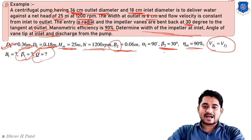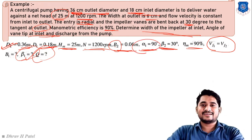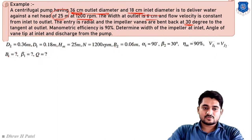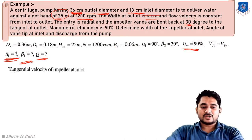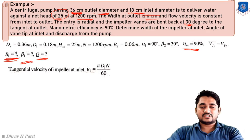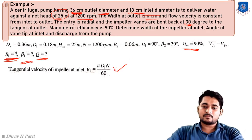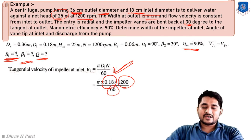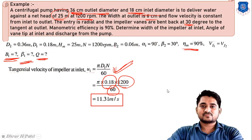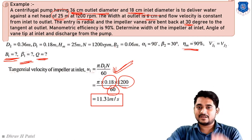For the centrifugal pump, α1 = 90° always. First, from the inlet velocity triangle, u1 = π d1 N / 60 = π × 0.18 × 1200 / 60 = 11.31 m/s, which is the tangential velocity of the impeller blade at inlet.